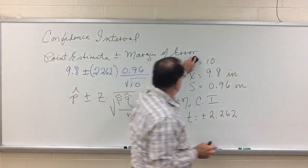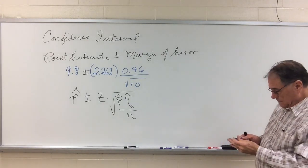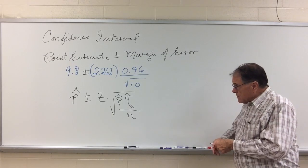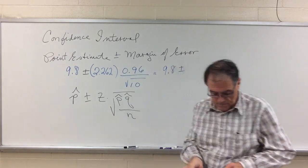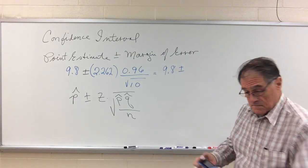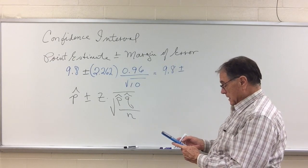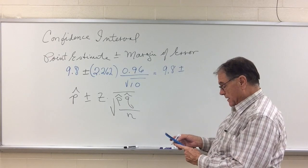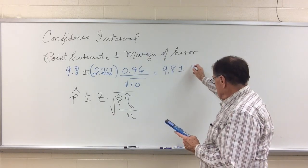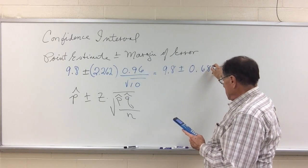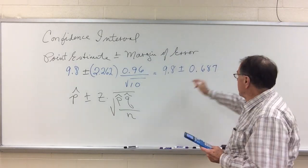So this is what I want to calculate. Let's do that calculation. So I'm going to have 9.8 plus or minus 2.262 times 0.96 divided by the square root of 10. And that gives me plus or minus 0.687.